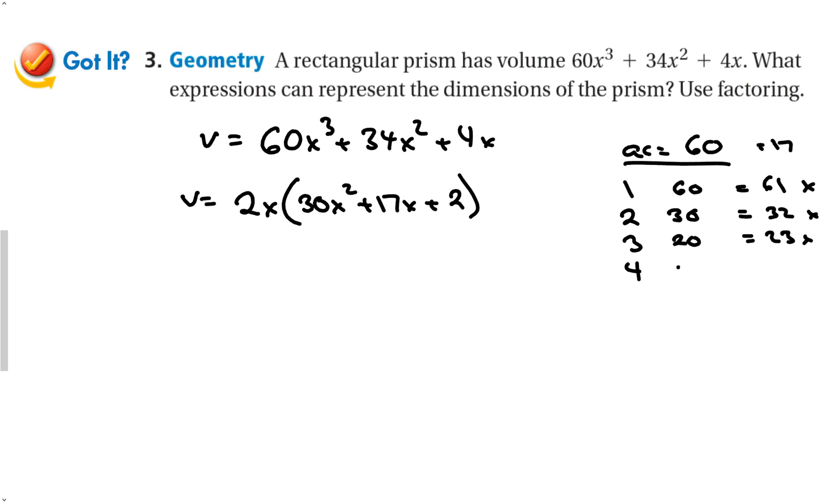4 times 15 is 60 and that is 19. No good. 5 times 12 is 60. And guess what 5 plus 12 is? 17. So we don't have to go any further than that.